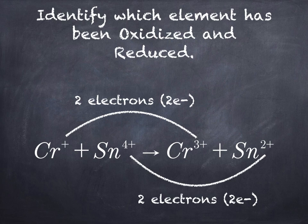If you look at the chromium, we see that the chromium starts off with a plus and it goes to 3+. Now electrons are negative, and so that would seem to indicate that the chromium is transferring electrons.